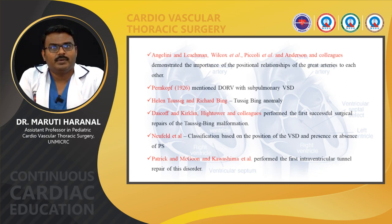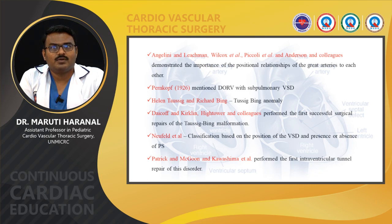Pernkopf mentioned DORV with subpulmonary VSD in 1926. Subsequently it was named the Taussig-Bing anomaly by Helen Taussig and Richard Bing. Dijkhoff and Kirklin, and Hightower and colleagues performed the first successful surgical repair of the Taussig-Bing malformation. Newfield et al. classified DORV based on the position of the VSD and presence or absence of pulmonary stenosis. Patrick and McGoon and Kawashima et al. performed the first interventricular tunnel repair of this disorder.